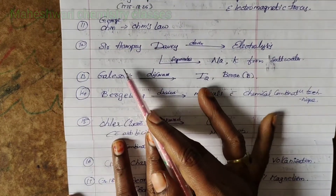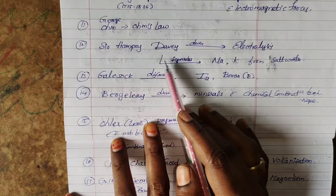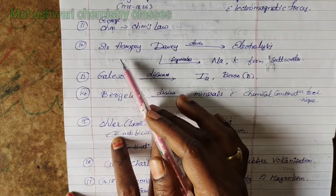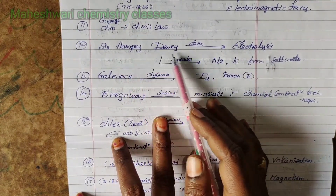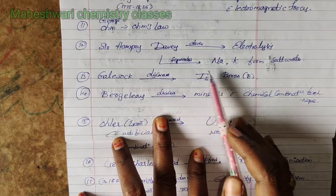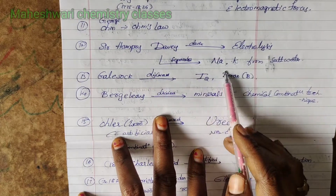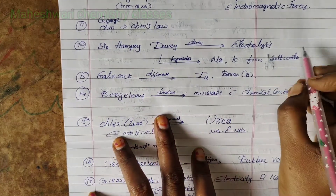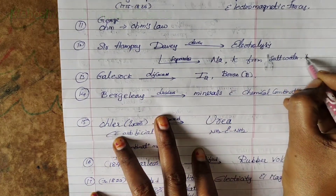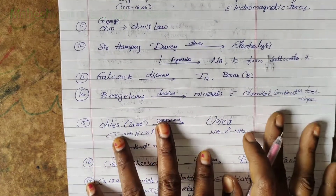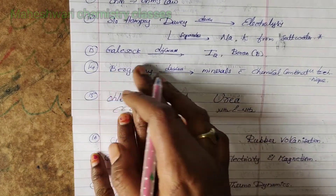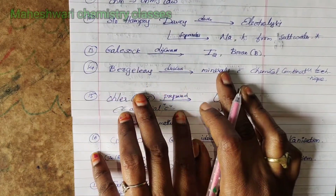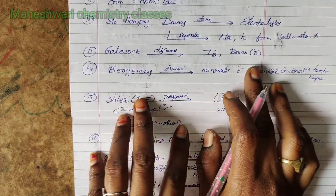Twelfth point: Sir Humphrey Davy discovered electrolysis and separated sodium and potassium from salt water. Thirteenth point: Gay-Lussac discovered iodine and boron.